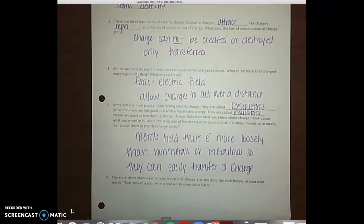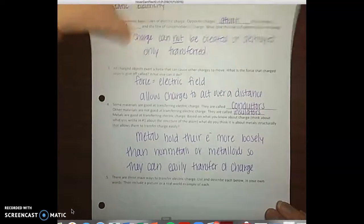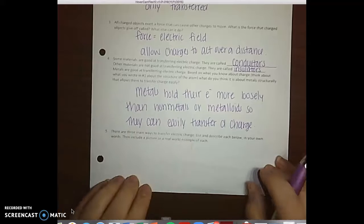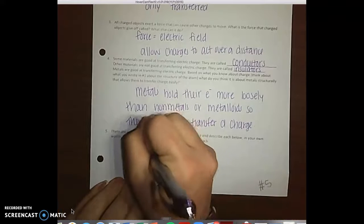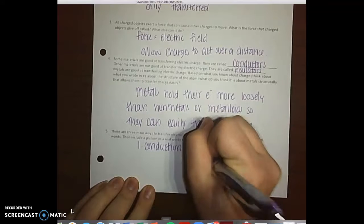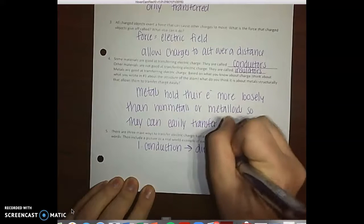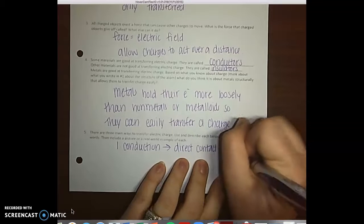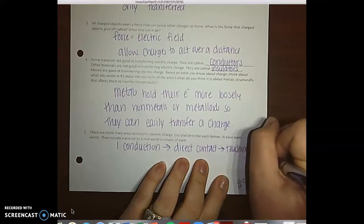Because they can transfer their electrons easily it makes it very easy for them to get charges either positive or negative charges. Number five says there are three main ways to transfer electric charge: list and describe each below in your own words and include a picture or a real-world example of each. The first type we've talked about is conduction. It's by direct contact so they have to be touching and a real-world example would be touching and shocking.